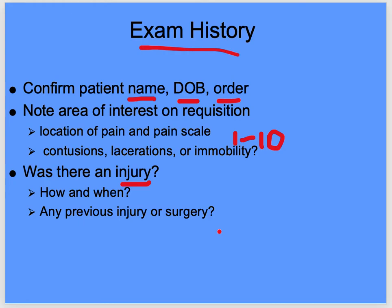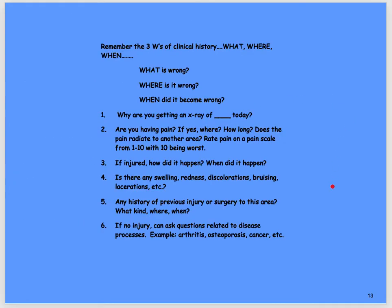Ask how and when the injury occurred, and about any previous injuries or surgeries. Use the three W's: what's wrong, where is it wrong, and when did it happen. Ask why the doctor sent them and note the pain scale. Ask about swelling, dislocation, or stitches. If no injuries, ask about diseases like arthritis, osteoporosis, or cancer — this helps determine what your patient can and cannot do.